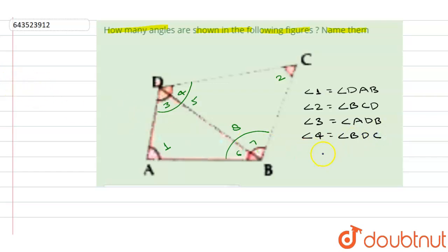Angle five is given by, which is found between line AD and CD, so angle is ADC.